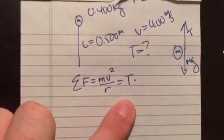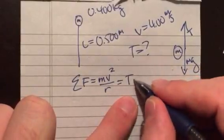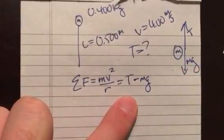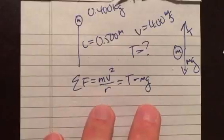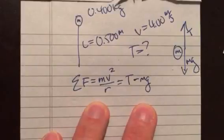So mv squared over r must be equal to tension plus, let's see, what is that, tension plus or minus? The net must be tension minus mg, right, because the mg part is, let me think about this.